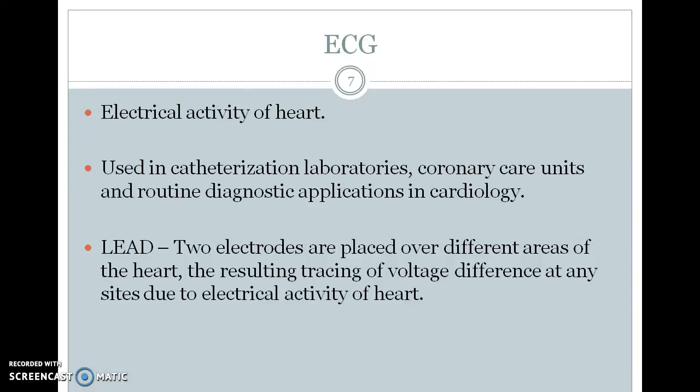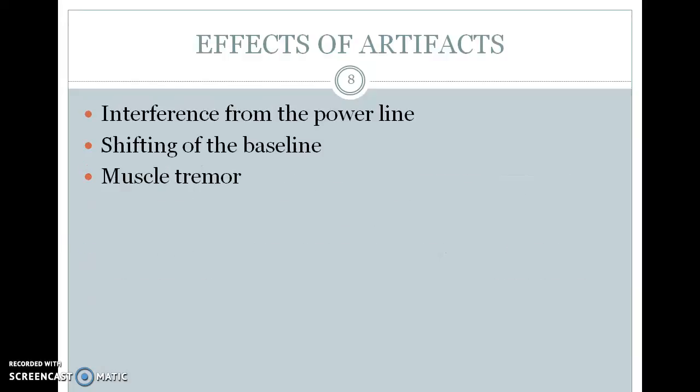Leads are used as measuring instruments. Two electrodes are placed over different areas of the heart, and different electrodes can be placed according to the application. The resulting tracing of the voltage difference is due to the electrical activity of the heart. Artifacts refer to noise introduced into the signal.